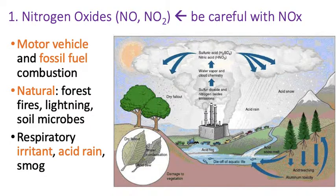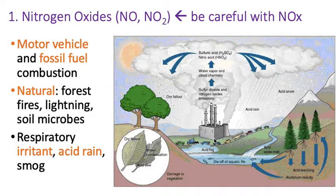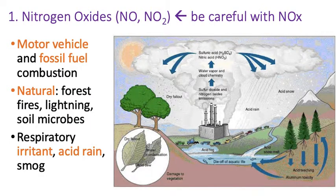Nitrogen oxides can cause respiratory irritation. They can cause acid rain — they combine in the atmosphere to form things like nitric acid, which gets carried down as part of the water cycle through acid rain or acid snow into your snowmelt. And they can influence smog at the ground level too.